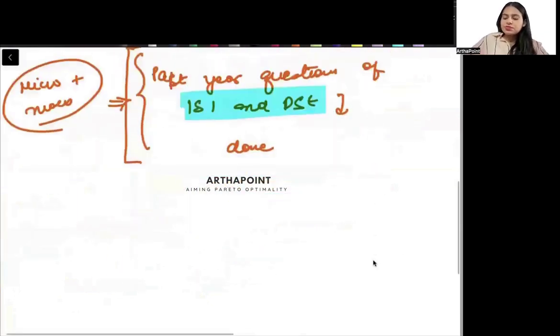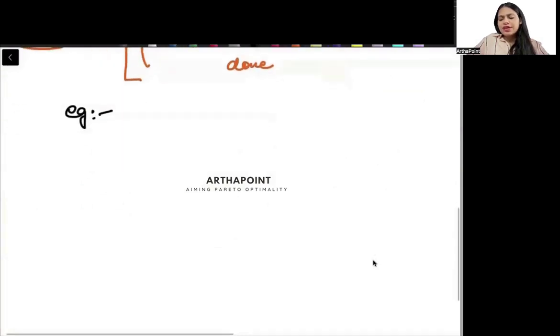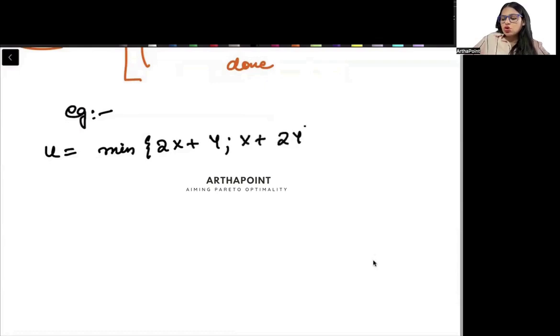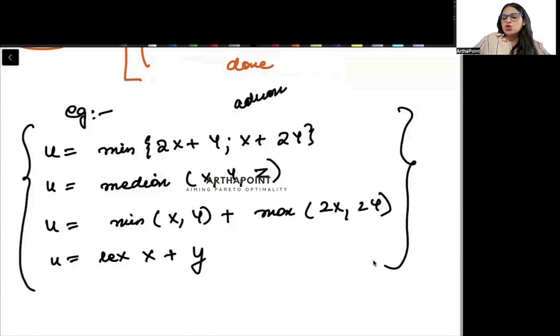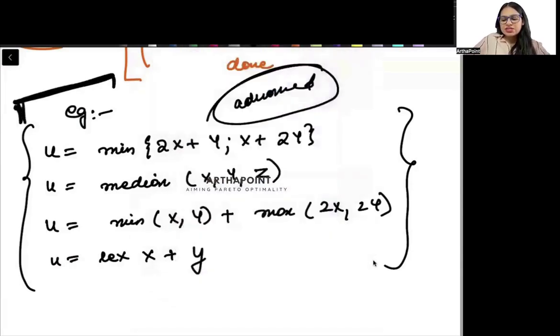Let me give you some examples. For example, if I give you a very famous utility function: u = min of 2x plus y comma x plus 2y, you should be able to solve this utility function. If I give you u equals median of x, y, z, you should be able to solve this. If I give you u equals min of x, y plus max of 2x comma 2y, you should be able to solve this kind of utility function. U equals lex x plus y. All the utility functions we have done in the advanced lectures, you need to make sure that you revise those utility functions well. This is something which can be definitely asked in exam.